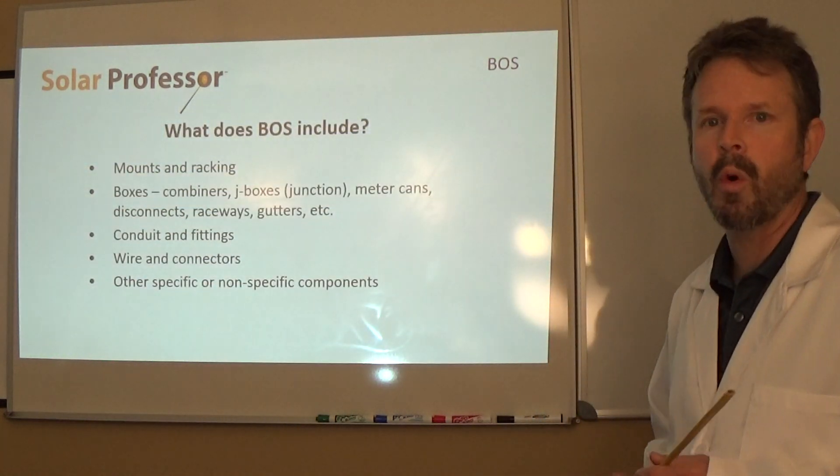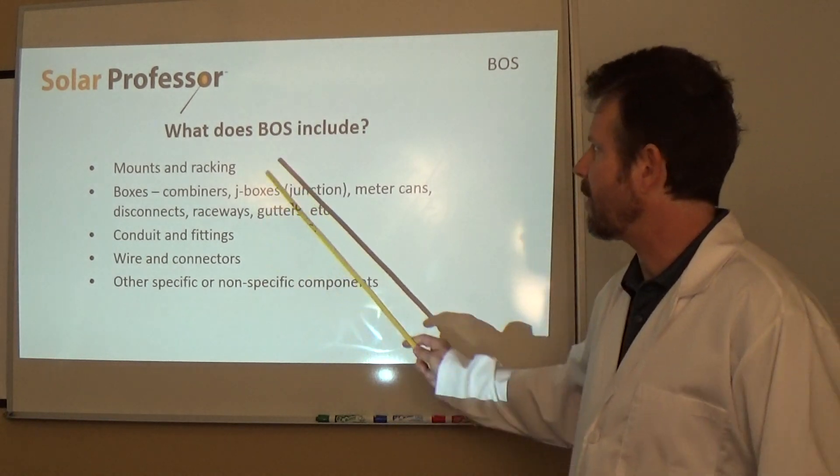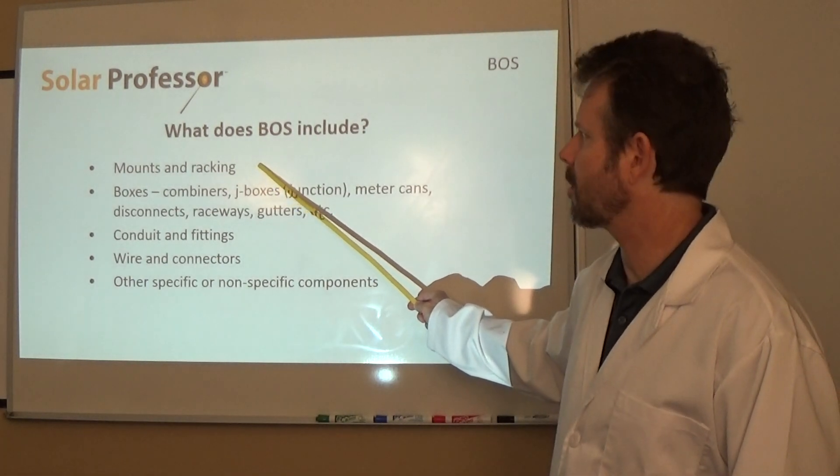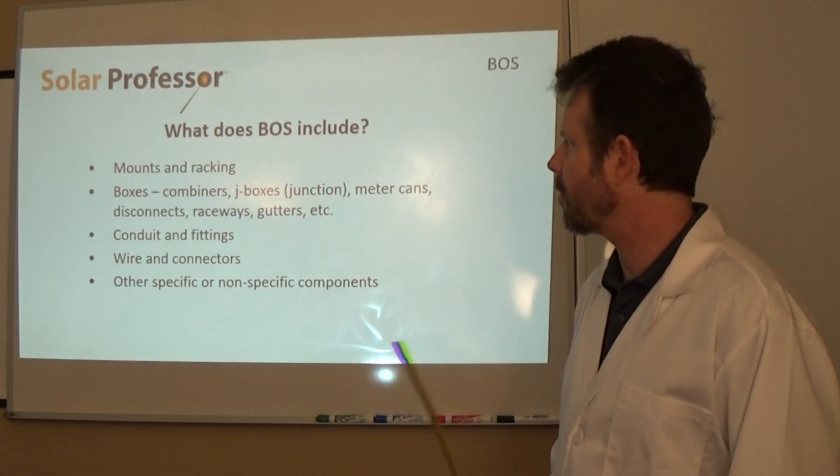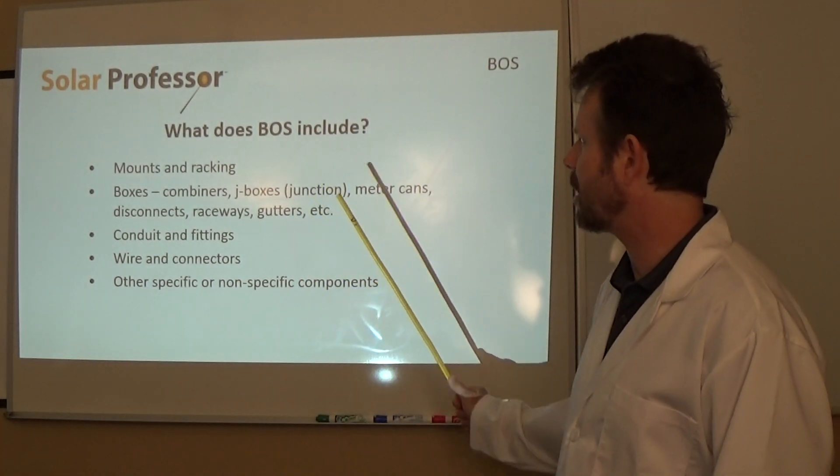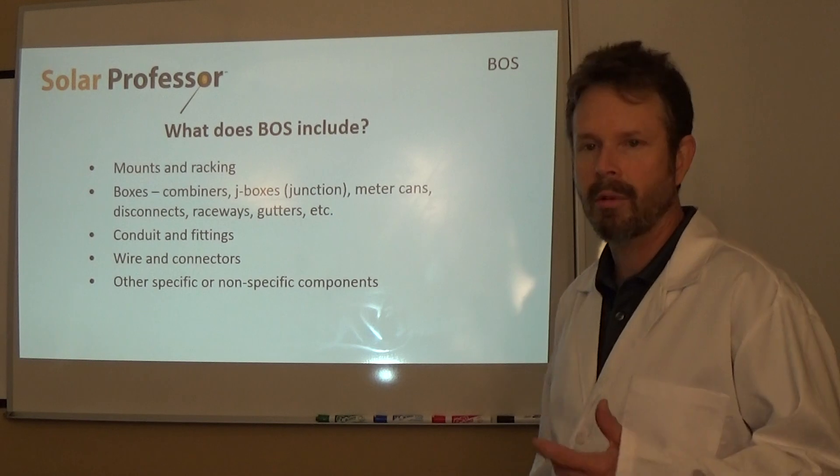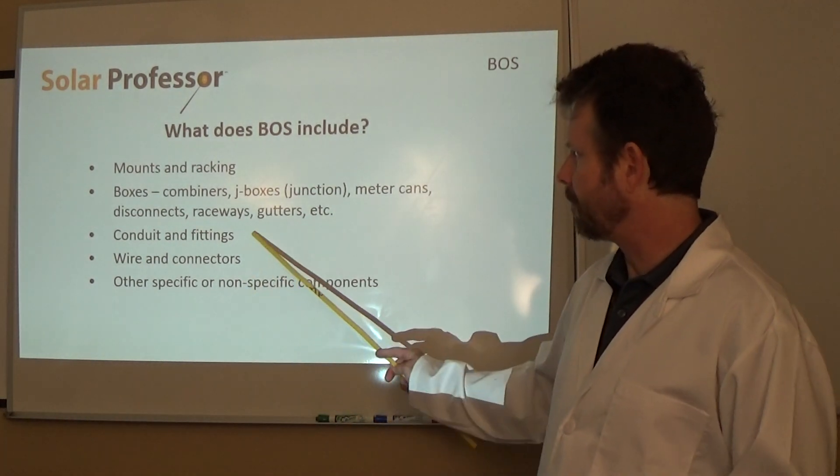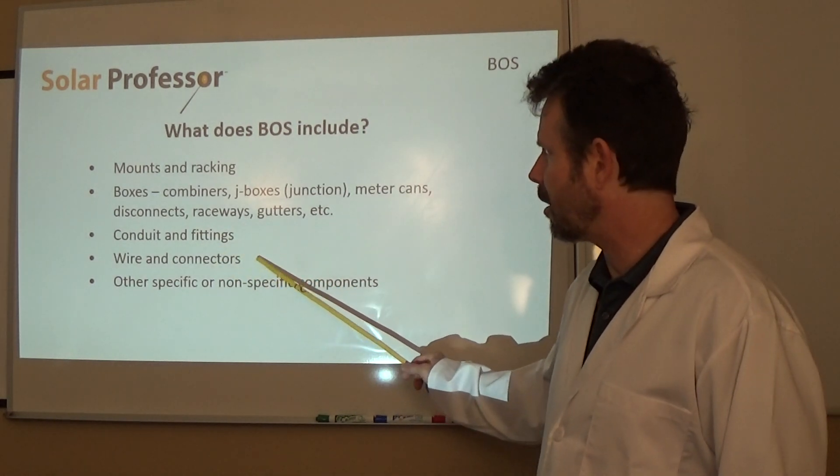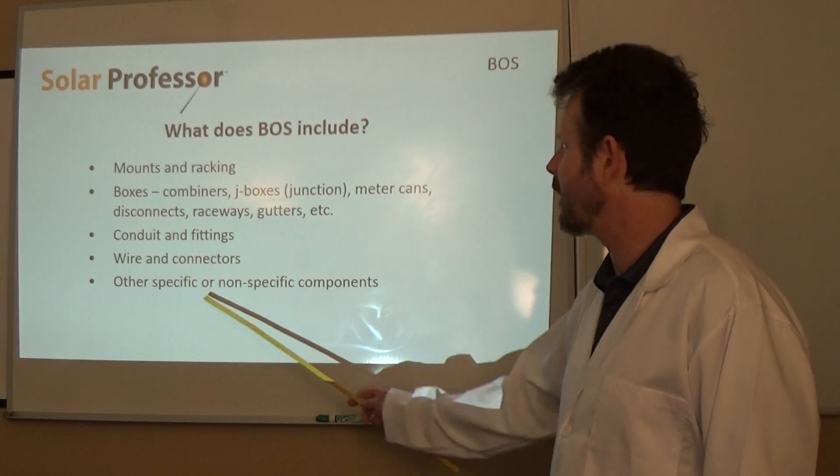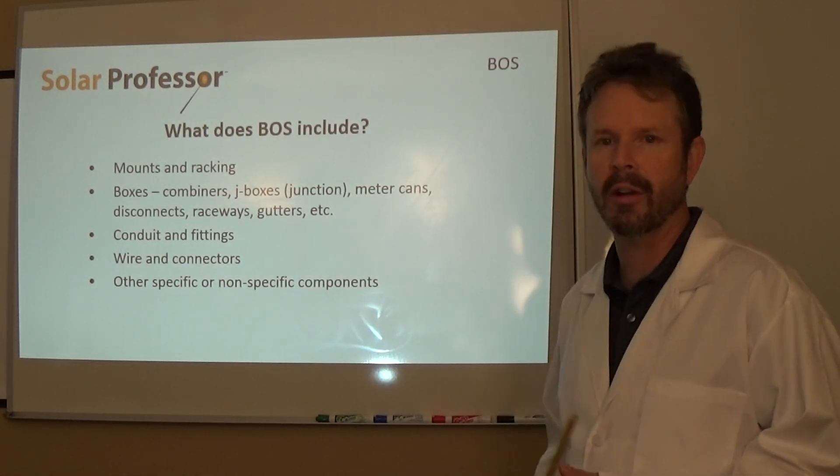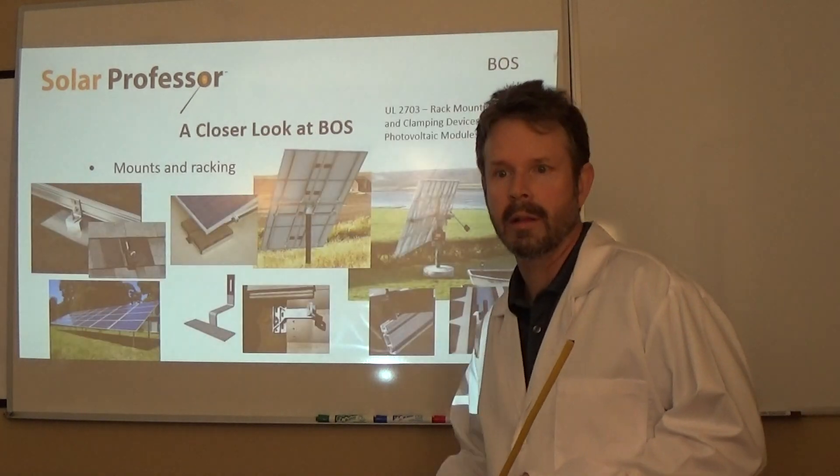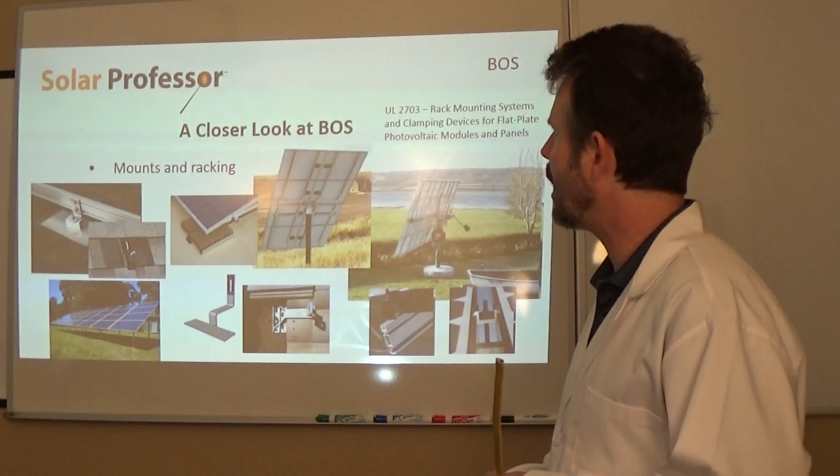So, this describes what does BOS include. I have got a couple of categories here. Mounts and racking and I am going to show you some pictures and such in regards to that. Boxes. So, we have combiner boxes, junction boxes, meter cans, disconnects, raceways, gutters, a lot of that is electrical type stuff. Conduit and fittings, of course, for electrical as well. And wire and connectors and that is directly electrical. Then I set up a kind of other specific or non-specific component category for us to take a look at. So, let's dive right in.